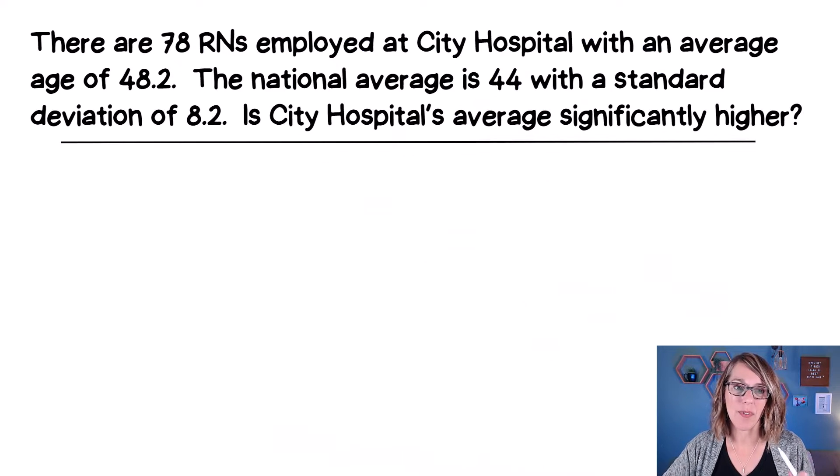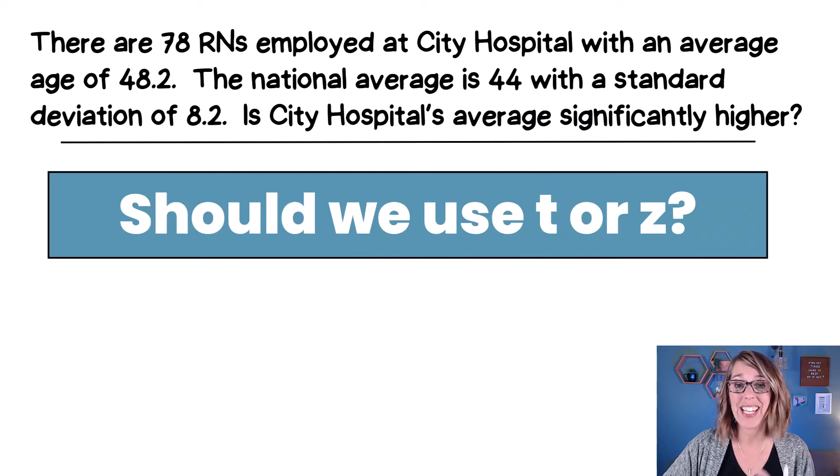So I want to start with this example. We've got nurses and we want to compare their average age to the national average. Should we use a T statistic or a Z statistic?